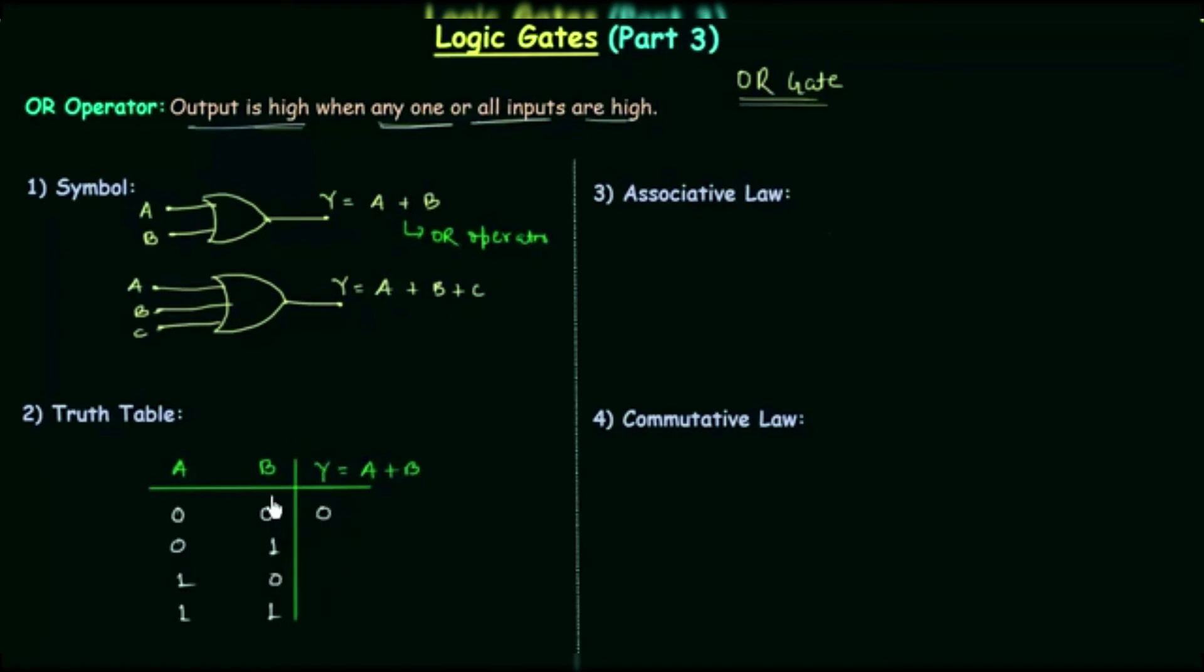In the second case B is high, so output is high. For third case A is high, so output is high. And for last case both A and B are high, so output is high. So this is the truth table for OR gate and this is very important because we will use this a lot.